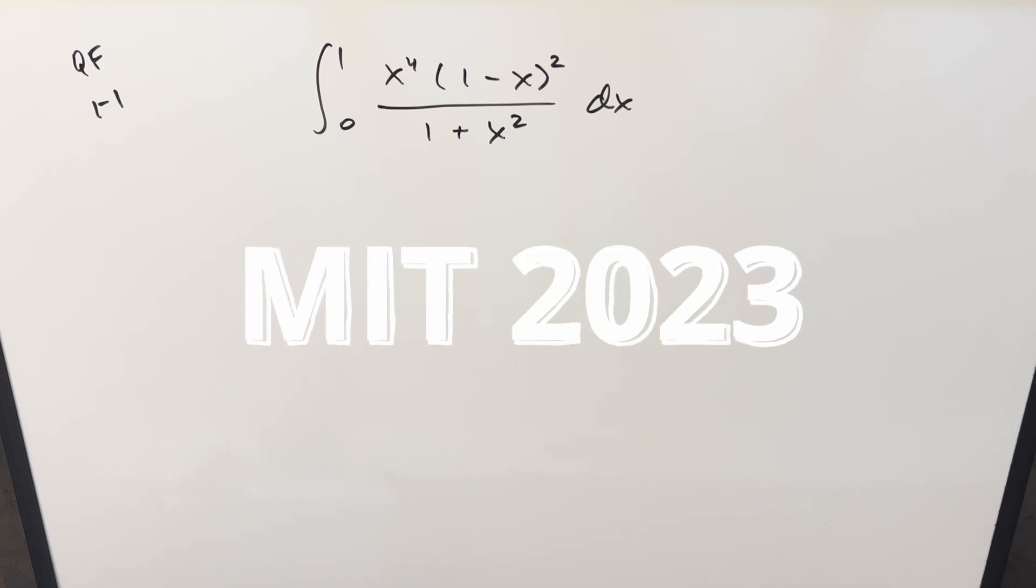Okay, we brought you another integral from the MIT integration B quarterfinals round one problem one. We have the integral from zero to one x to the fourth one minus x squared over one plus x squared dx.